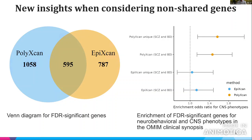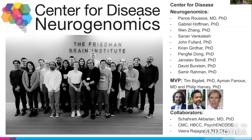This is a good way of striking a balance between power and confidence. Thank you to my collaborators from the Center for Disease Neurogenomics, especially Panos and Gabriel, our MVP collaborators, collaborators from the Akbarian Lab at Sinai, and of course PsycEncode.